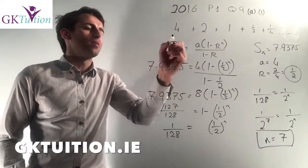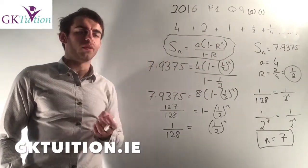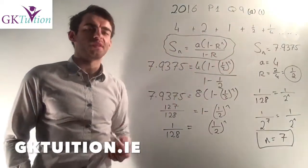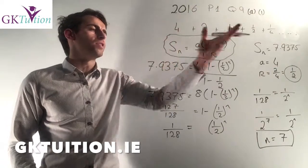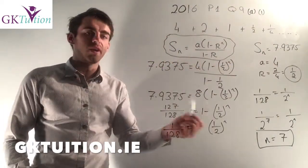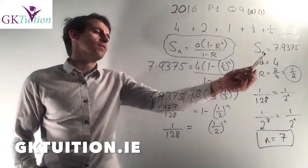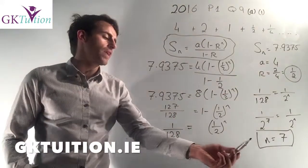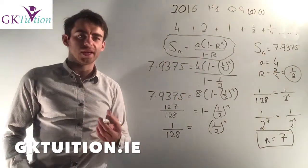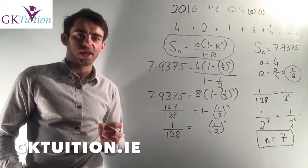That's probably the best way of doing this question, but clearly there is an easier way — you could have just listed out the first 7 terms and then added them together, and they would have added up to 7.9375. The problem there is what if they had given you a massive number, like 60 — you don't want to write out 60 different terms and add them all together. So this is the more universal method that will work in each case.